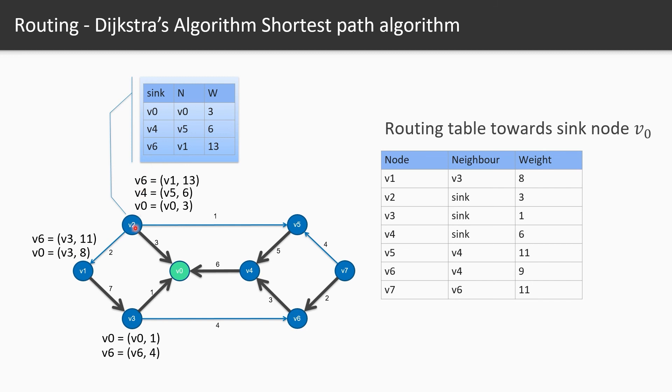If you look at the node 2 routing table v6, let's say a packet is coming to v2 which is destined for v6 then v2 knows that I need to forward this packet to v1 here. The total weight of this whole route will be 13. So 2 plus 7 plus 4 makes 13. In the same way all of the other nodes construct their routing table.